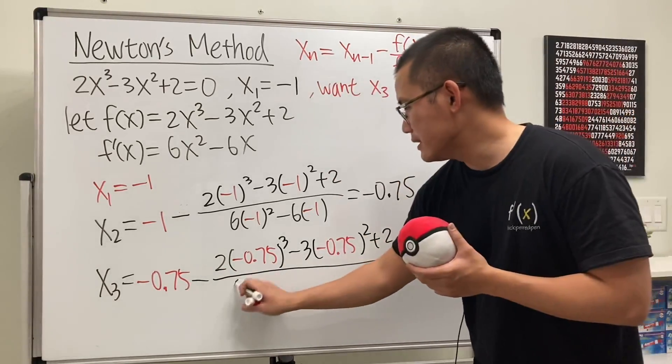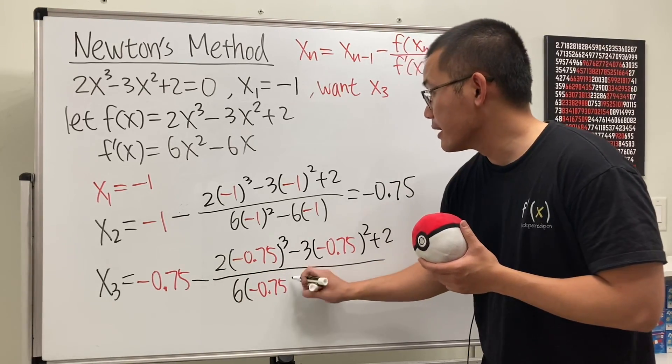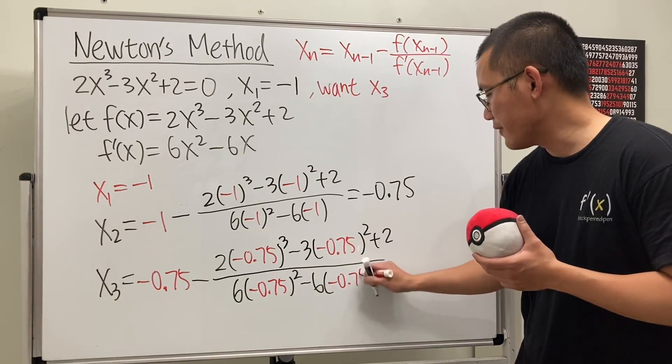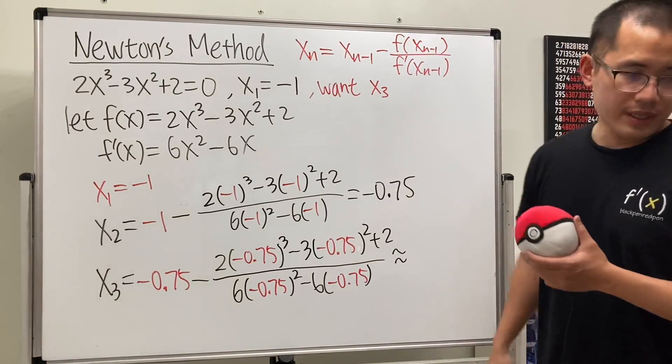And over, okay, do the same thing. So, we have 6 times negative 0.75 squared minus 6 times negative 0.75. And, again, just kind of work this out. This time, you'll get a pretty crazy number.